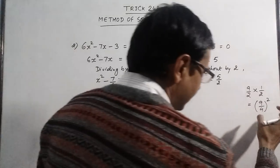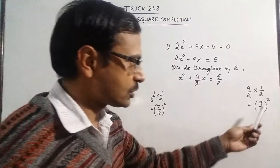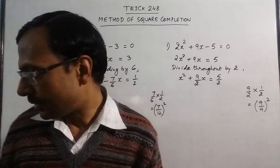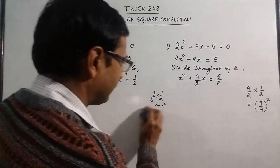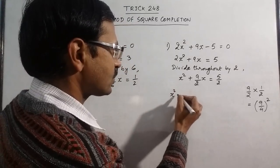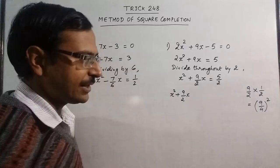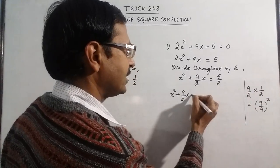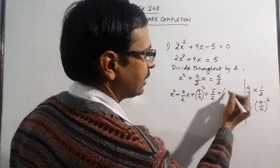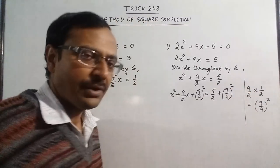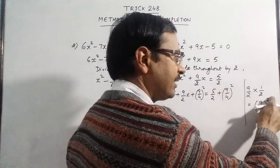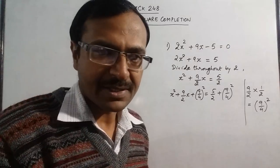This term (9/4)² has to be added on both sides of the equation. So we have x² + 9/2 x + (9/4)² on the LHS, and also add (9/4)² on the RHS. We have taken half the coefficient of x, squared it, and added it to both the LHS and RHS of the equation.